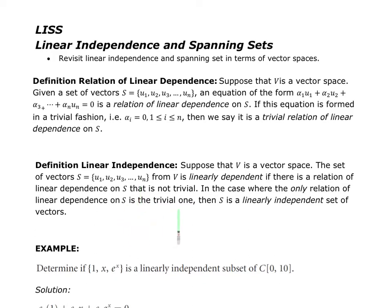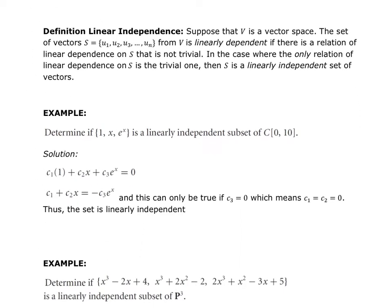If we're asked to determine whether or not a given set of vectors is linearly independent, and we're looking at the interval from zero to ten, I set up my scalar multipliers c1, c2, c3, and multiply them by each element in my vector set. So I get c1 times 1, plus c2 times x, plus c3 times e to the x, and set it equal to zero.